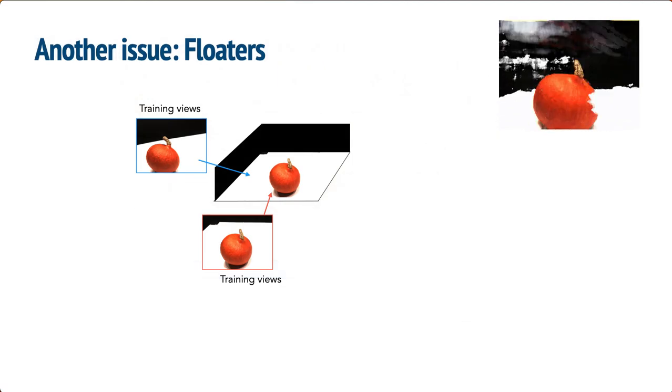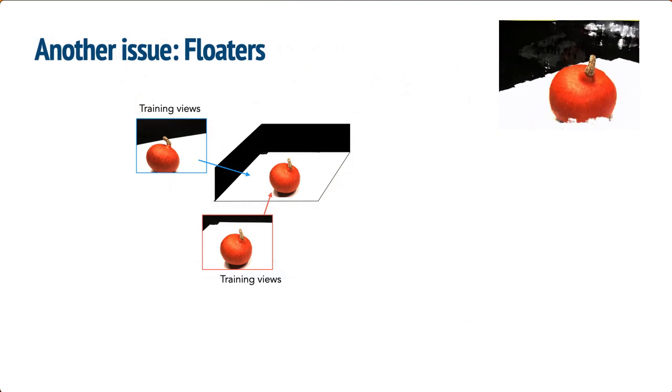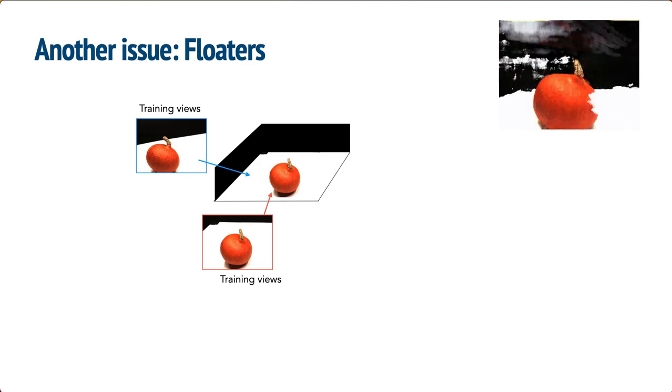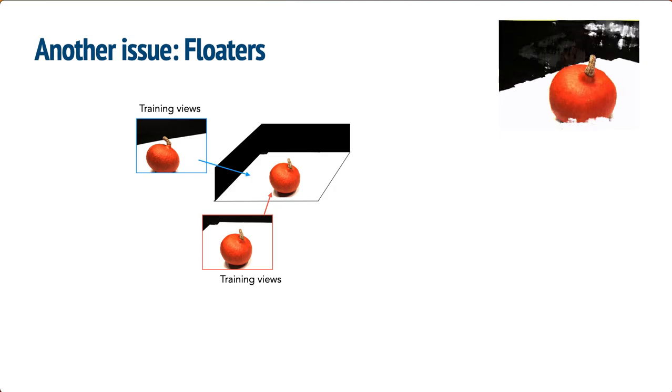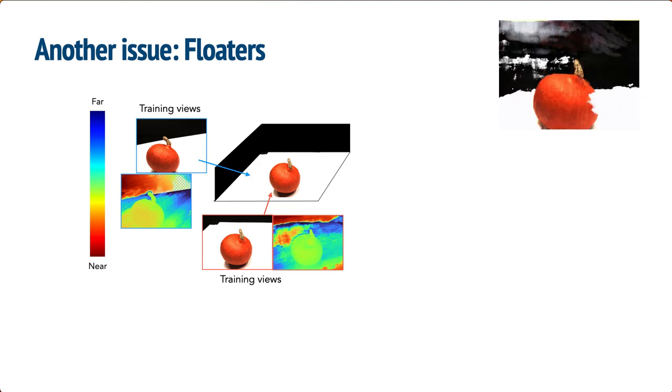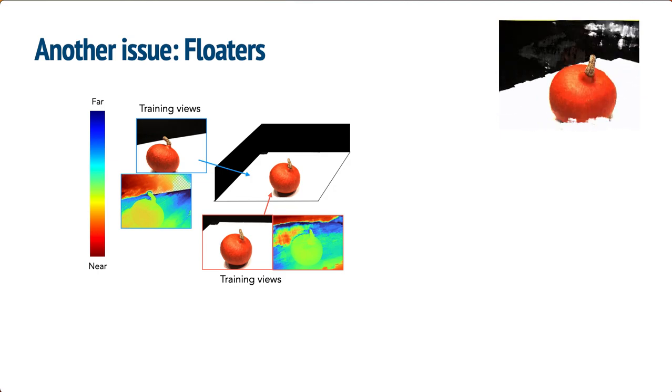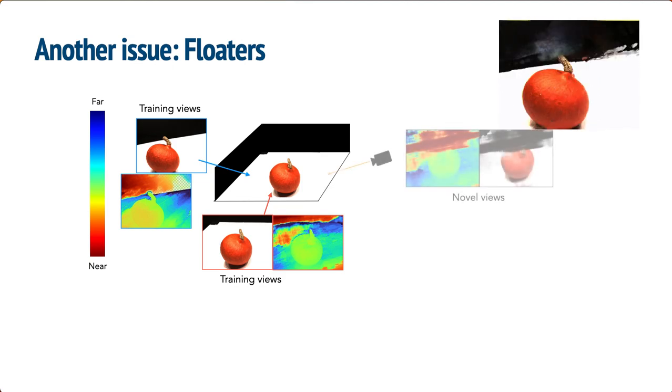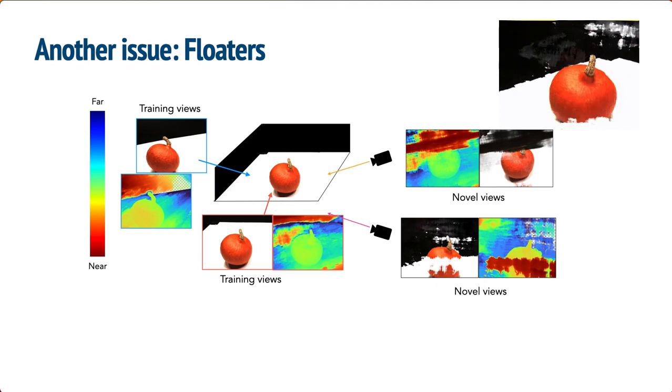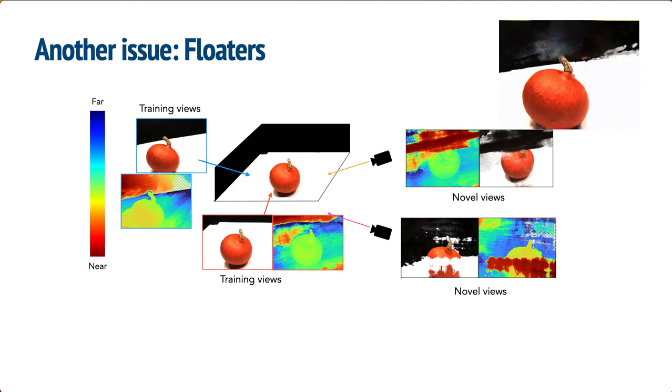We also identify another issue in few-shot neural rendering: floaters. Although a model can learn to predict the appearance of training views precisely, its geometry prediction is usually inaccurate for views with few-shot observation, as seen in the example here. This bad geometry often manifests in the form of floaters or artifacts in novel views.